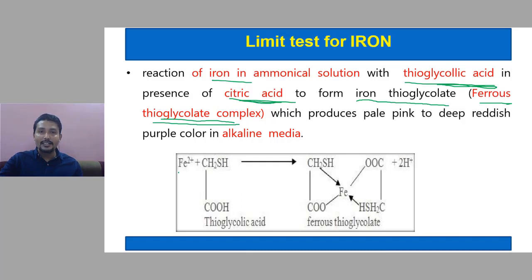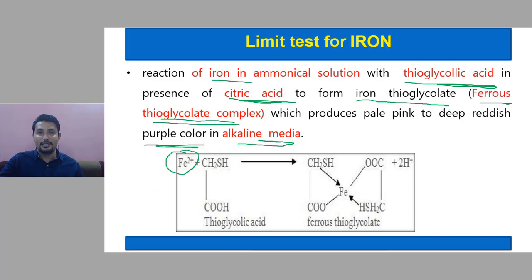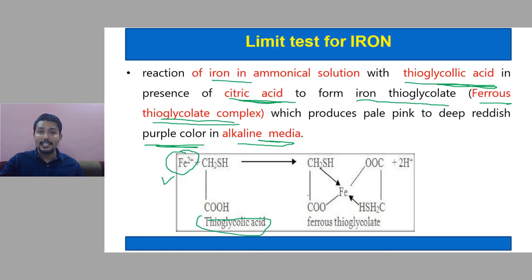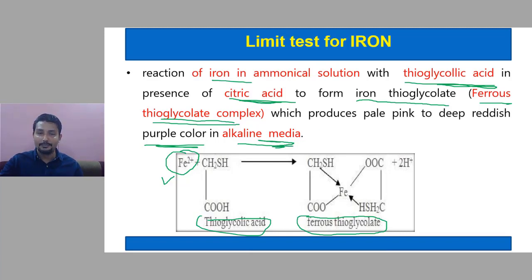This produces a pale pink to deep reddish or sometimes purple color in alkaline media. Remember: ferrous means Fe2+, ferric means Fe3+. Here, it should be in Fe2+ form. The reaction of Fe2+ with thioglycolic acid forms ferrous thioglycolate complex. All this procedure is performed in alkaline media, and because of that, the ammoniacal solution is prepared, which will produce pink to purple color.